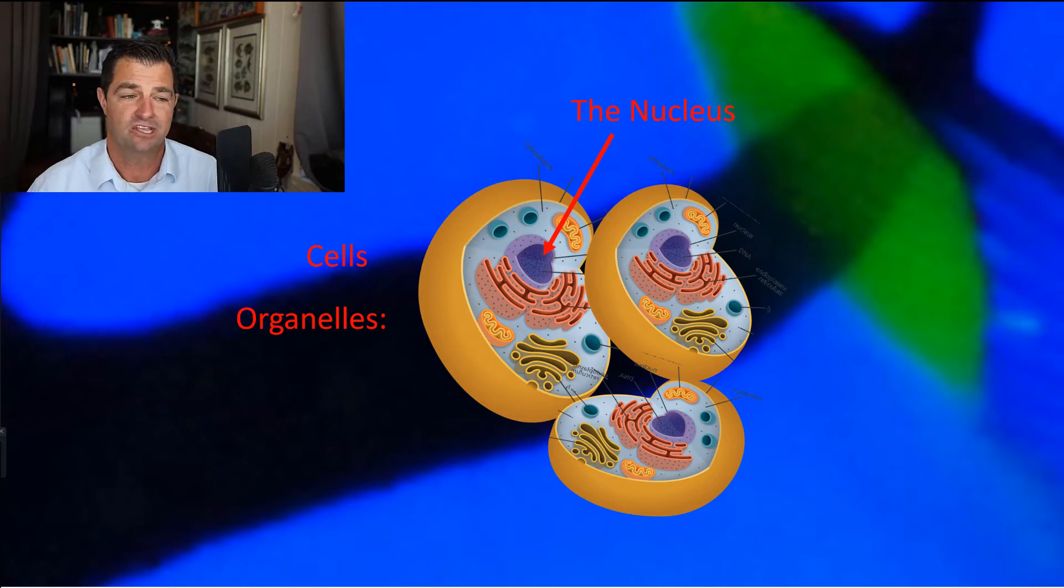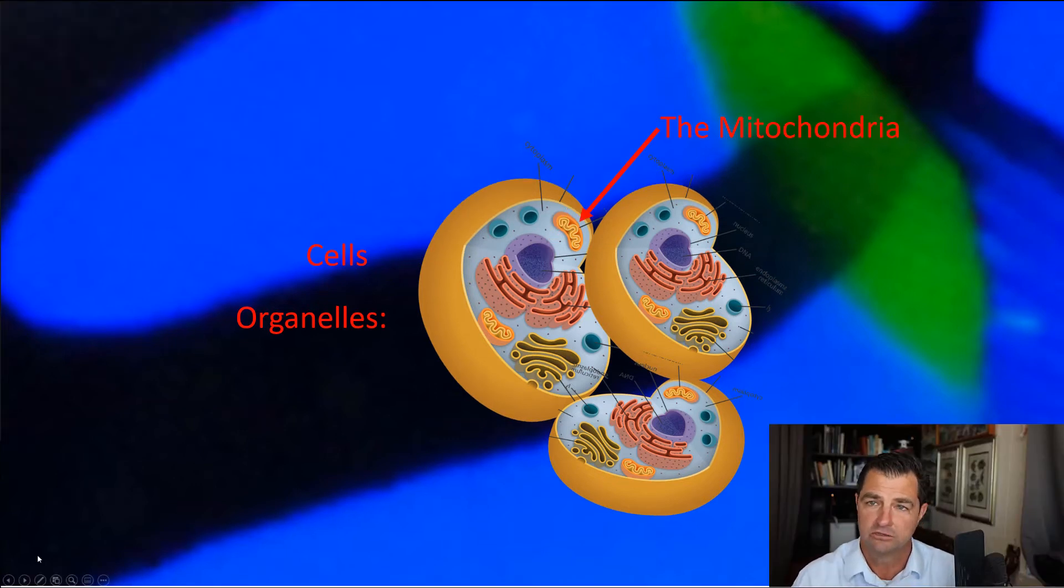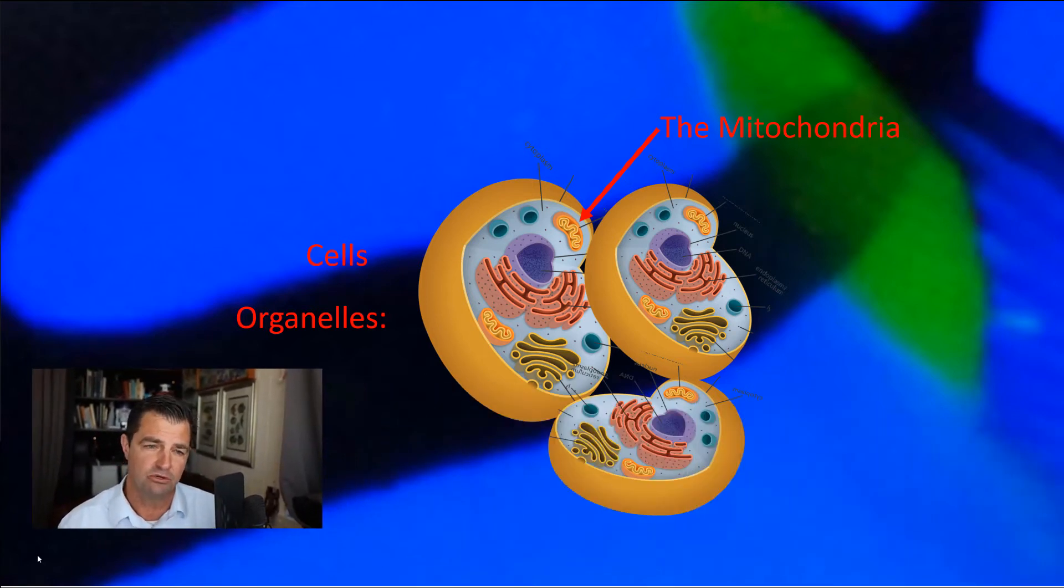The last organelle that we'll talk about today is what's called the mitochondria. And you can see a mitochondria here. Cells have many mitochondria depending on what the cell does. But the mitochondria is often referred to as the powerhouse of the cell because the mitochondria helps break down food and turn it into usable energy so that the cells can do things like move the fish and that sort of thing. And we'll get into more of that later, but I think that's a good starting point.